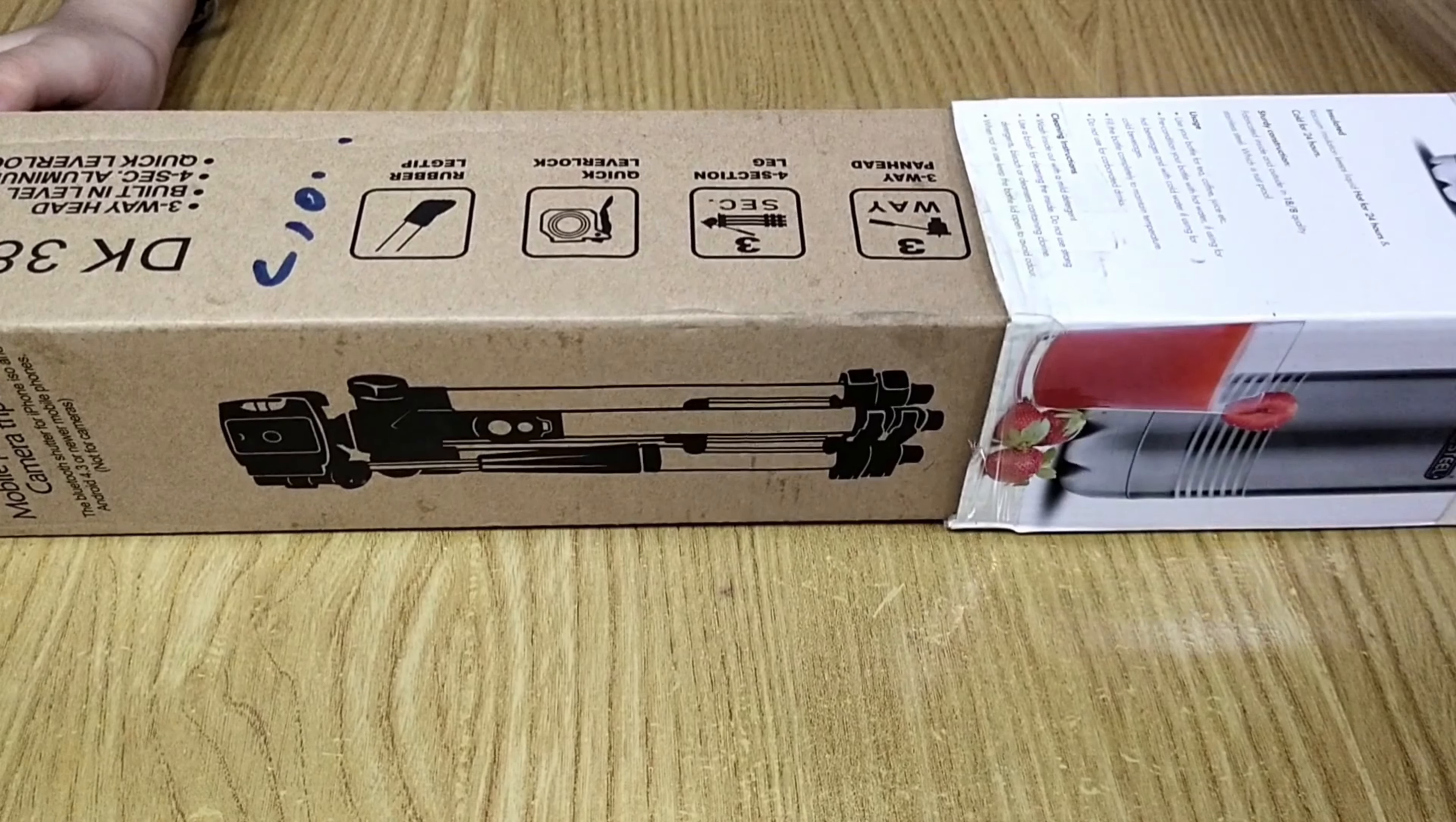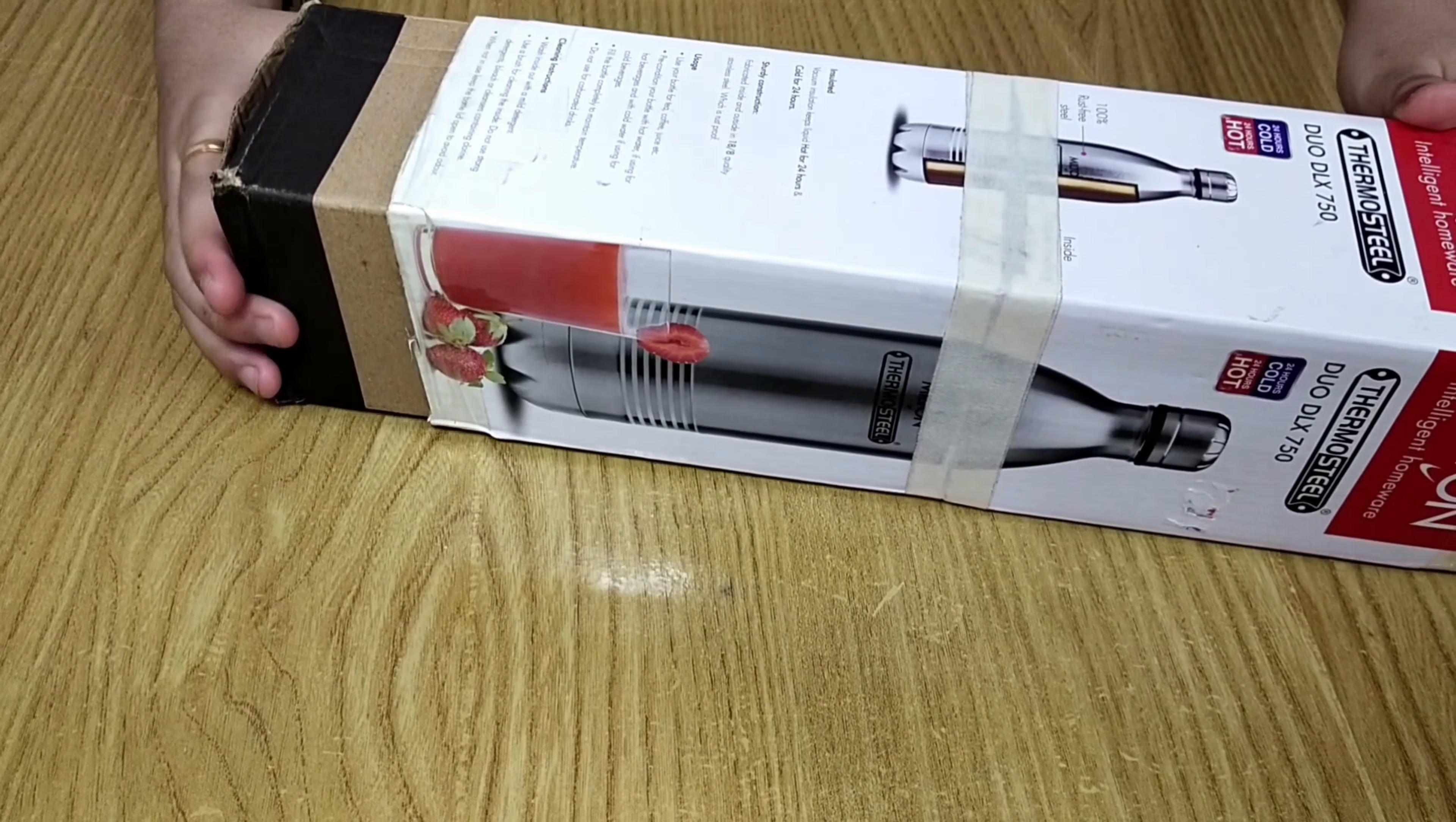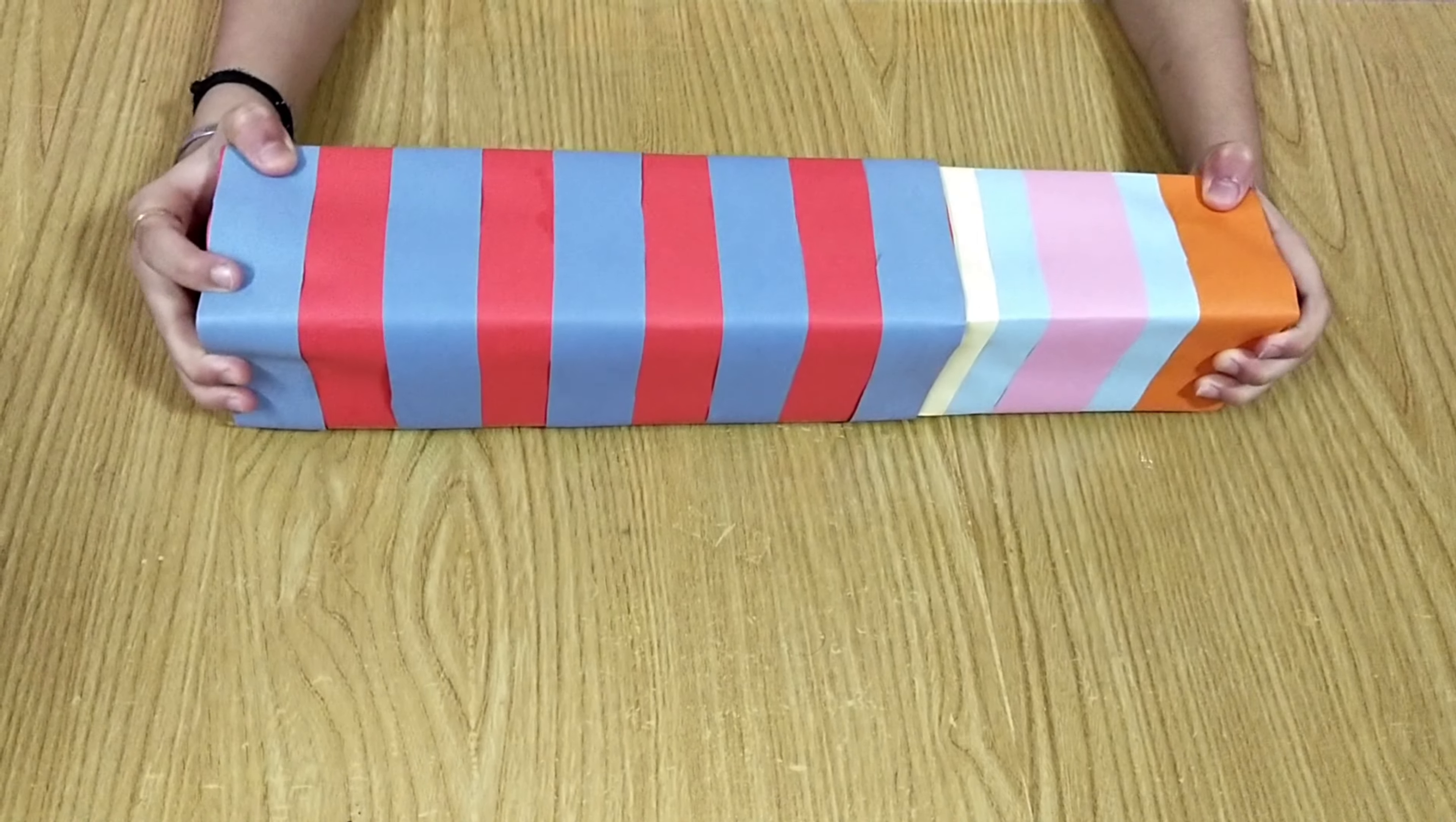To view the image, now insert the small box into the big box and adjust the small box to get a clear image. Our pinhole camera is ready. To make it look attractive I have covered it with color papers.